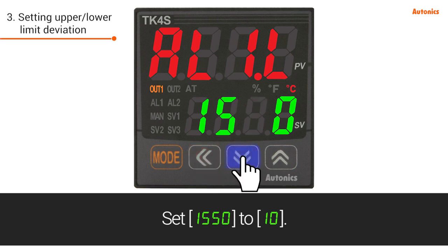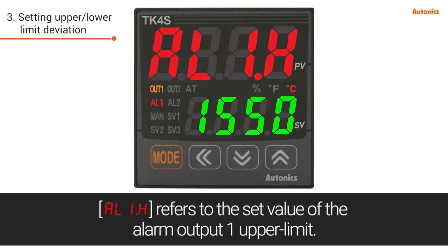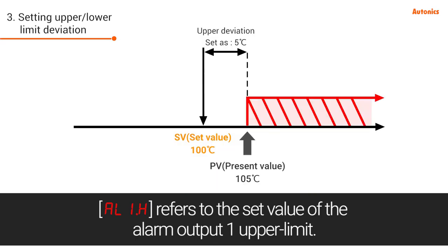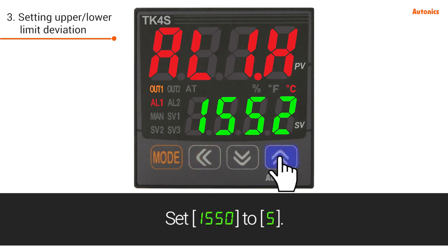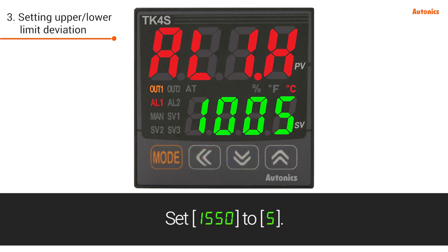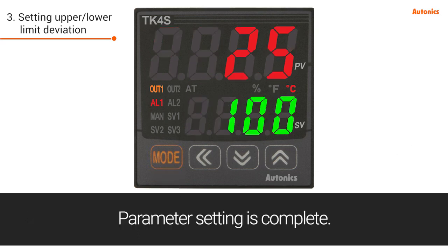Set 1550 to 10, and 0540 to 10. Hold the mode key for three seconds to return to run mode. Parameter setting is complete.